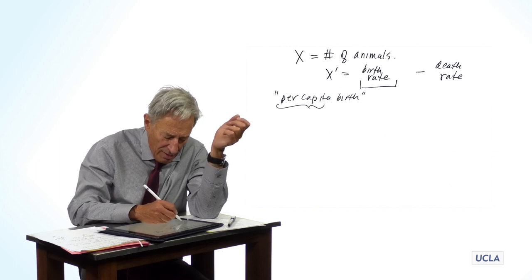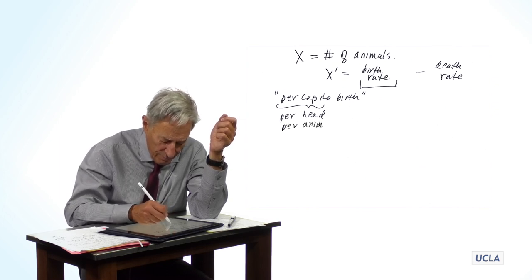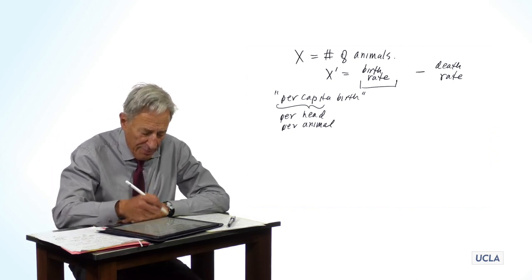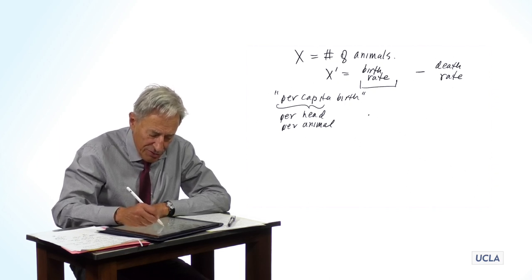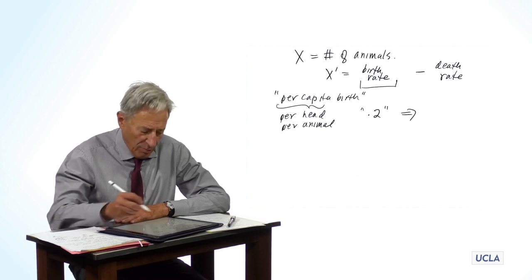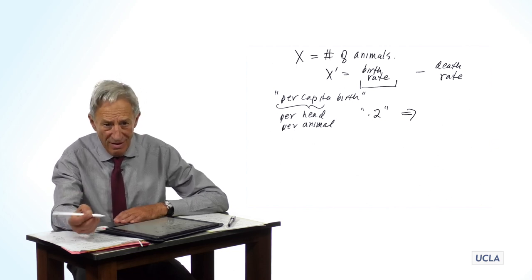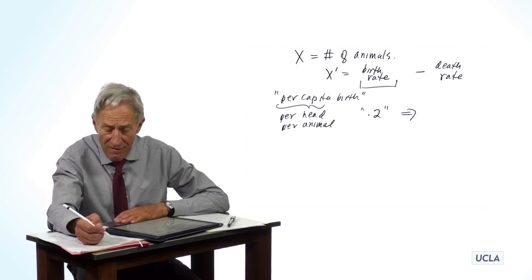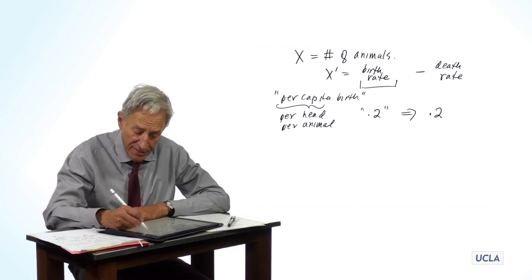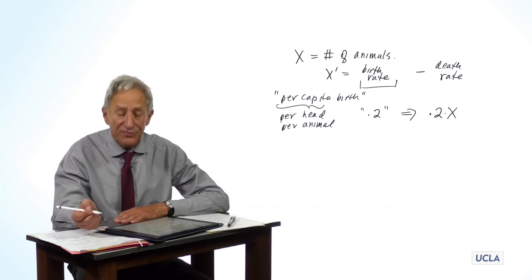So per capita just means per head or per animal. So if we say that the per capita birth rate is 0.2, what that means is each animal per head has a 0.2 probability of giving rise to an offspring, which means that the total change in the population is going to be the per capita birth rate times the number of capitas there at that time or 0.2 times X.